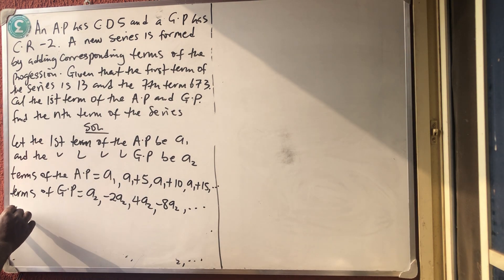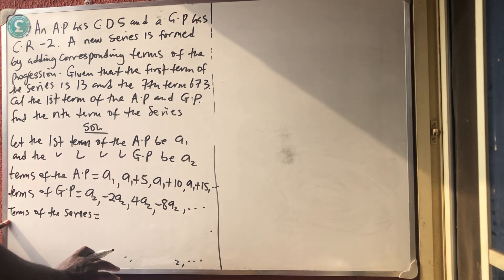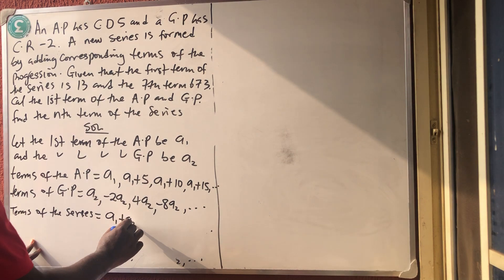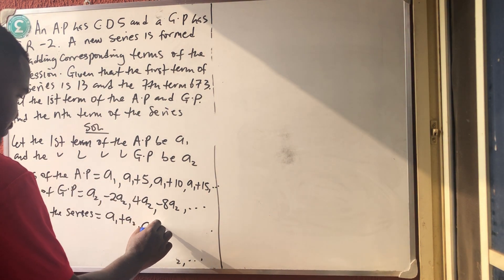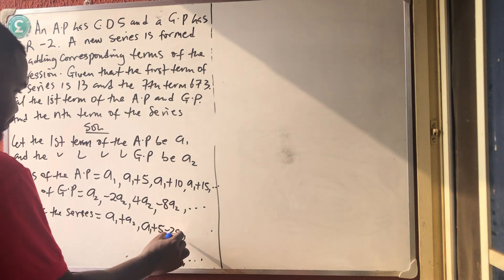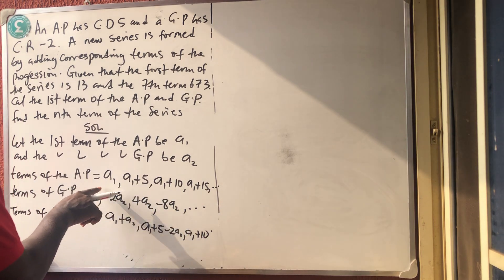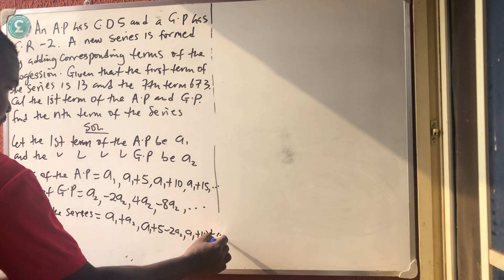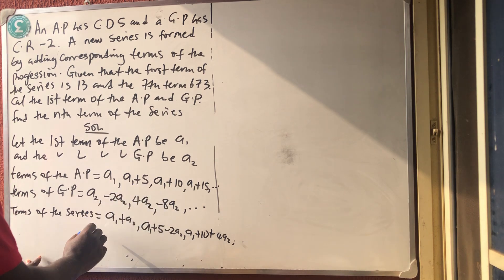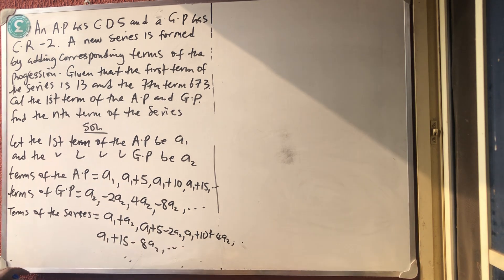Now the terms of the new series are gotten by adding the corresponding terms of the AP and GP. So the first term is A1 plus A2. The second term is A1 plus 5 plus minus 2A2. The third term is A1 plus 10 plus 4A2. The fourth term is A1 plus 15 minus 8A2, and so on.